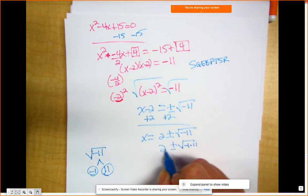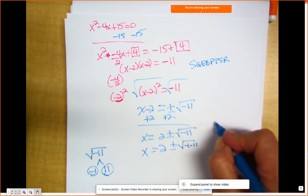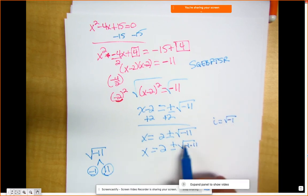Remember that we learned about i, that the i is equivalent to the square root of negative 1. So I could cancel out this or basically say come on out and make i. So this is going to be 2 plus or minus i root 11.